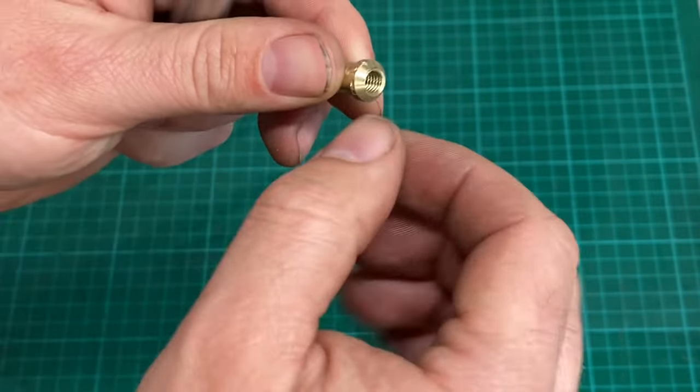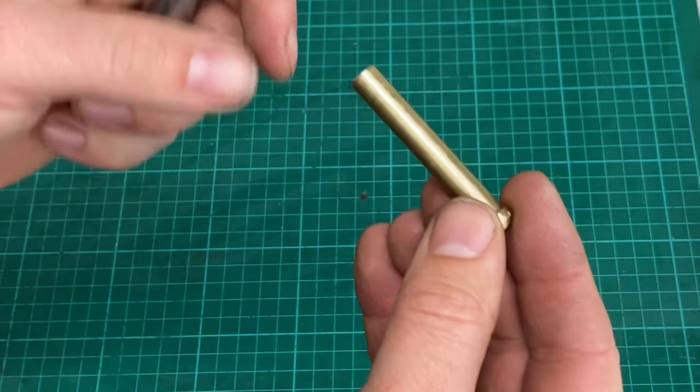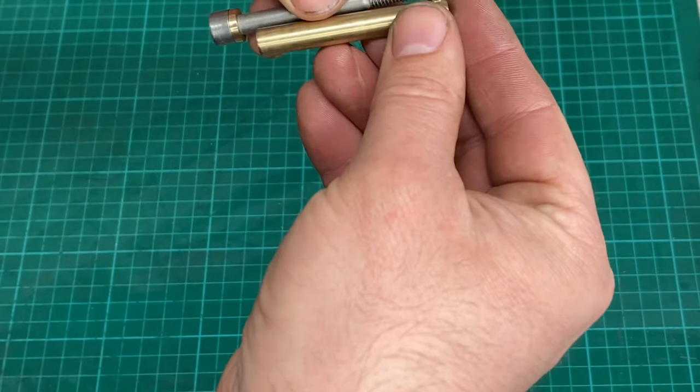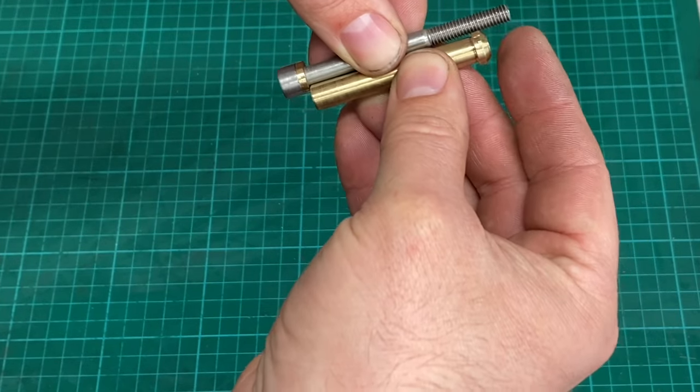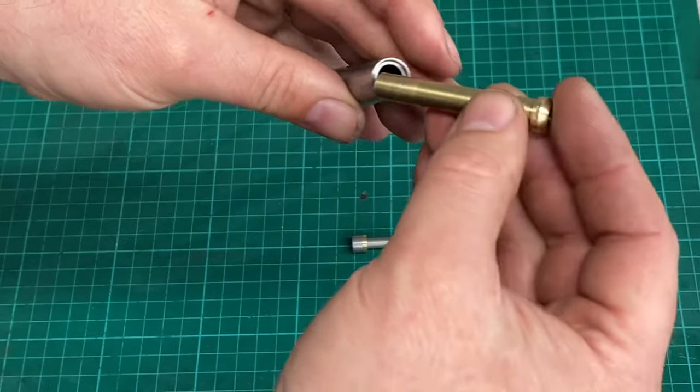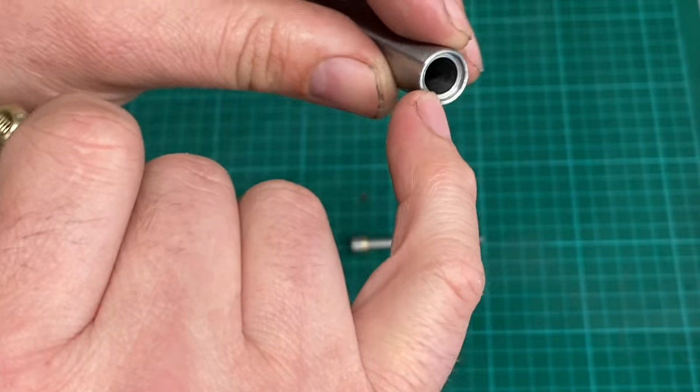So when it's back up and running I'll machine two little flats onto this cone here so that I can get an adjustable spanner just on the end of it. And the reason I need to do that is so that I can lock the threads together and set the clearance.